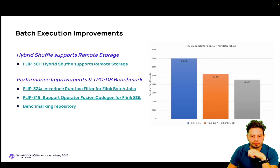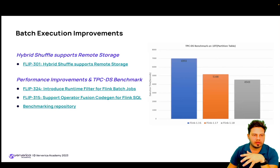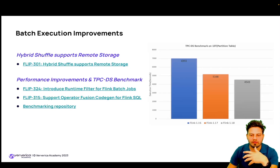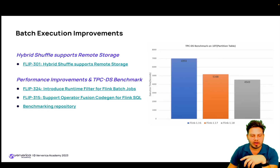There are also performance improvements verified by TPC-DS benchmarks. FLIP-324 introduces the runtime filter for Flink batch. The runtime filter is a common method for optimizing join performance — it dynamically generates filter conditions for certain join queries at runtime to reduce the amount of scanned or shuffled data, avoiding unnecessary I/O. Benchmark results observed a 3x improvement in particular queries when this feature is enabled.